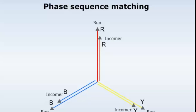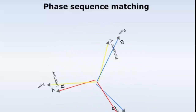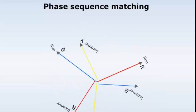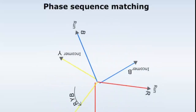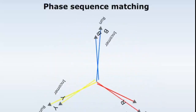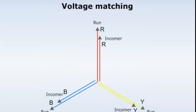The first condition is that the phase sequence of the incoming alternator should match the phase sequence of the running alternator. For example, if the phase sequence of the incoming alternator is RYB, then the phase sequence of the running alternator must also be RYB. At this condition, both alternators are rotating in the same direction with the same phase sequence. If the phase sequences are not the same, they are rotating in opposite directions.